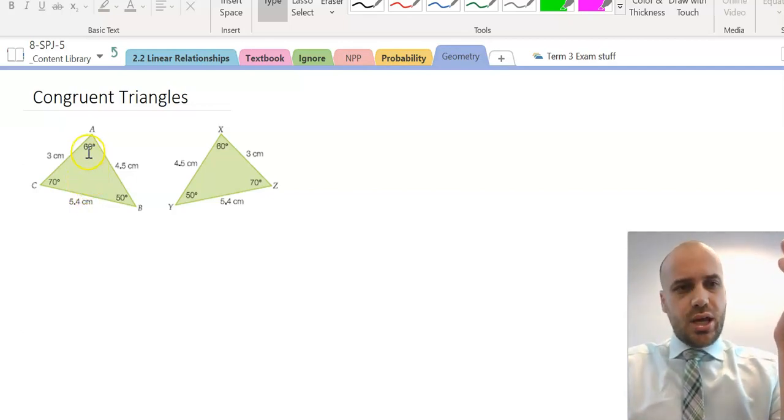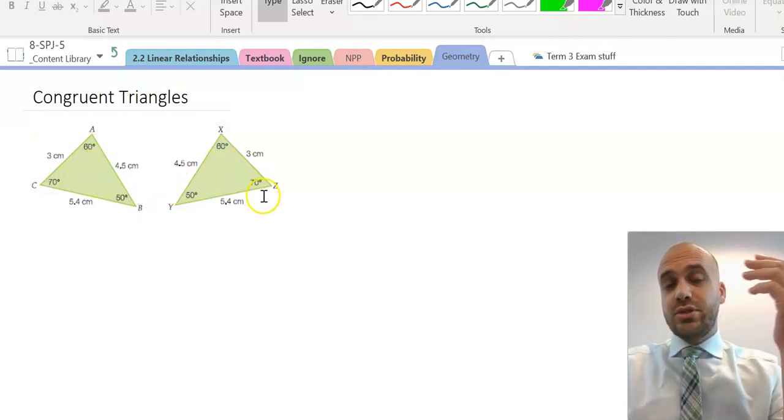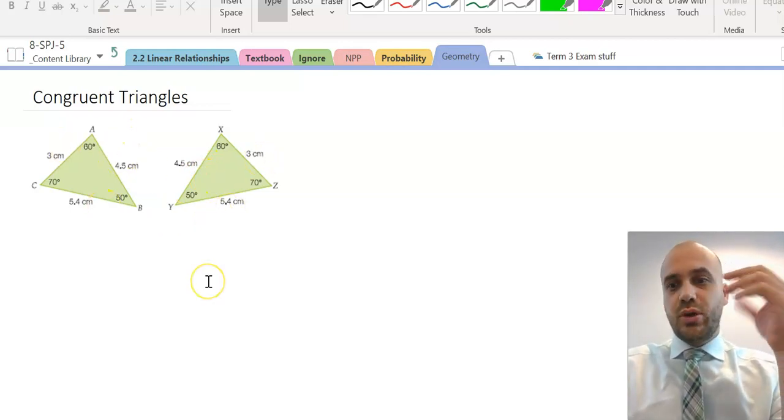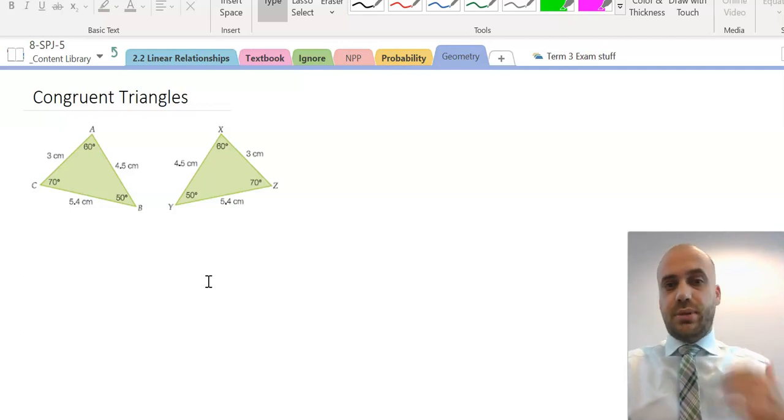I can see that they're the same shape because all the angles match up: 60, 50, 70, 60, 50, 70, and all the sides match up: 4.5, 3, 5.4, 4.5, 3, 5.4. They must be the same shape and the same size.